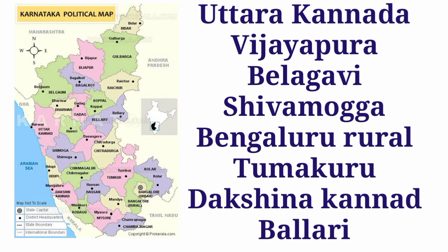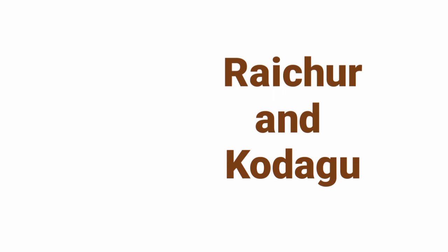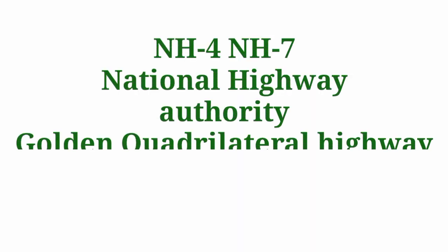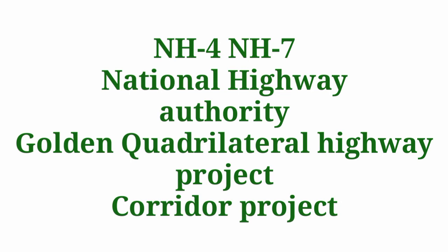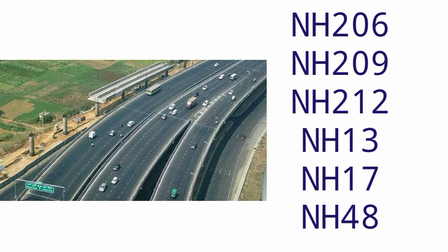National highways are not distributed equally among all districts. Uttara Kannada, Vijayapura, Belagavi, Shivamogga, Bengaluru Rural, Tumkuru, Dakshina Kannada, and Ballari districts have more national highways. Raichur and Kodagu districts have no national highways. NH4 and NH7 come under the Golden Quadrilateral Highway Project and Corridor Project with six lanes. Other main national highways passing through Karnataka include NH206, NH212, NH13, NH17, and NH48.